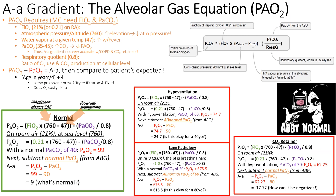To calculate the A-a gradient, you can just use MDCalc — punch in the numbers and it gives you the result. No need to memorize the formula. You get your number and ask: is this normal for this person's age? Compare it to the age-based expected value.